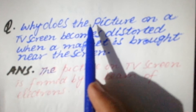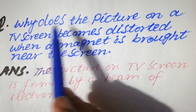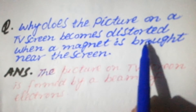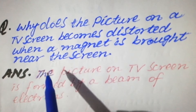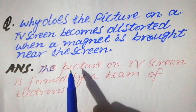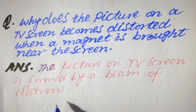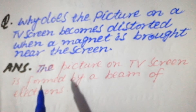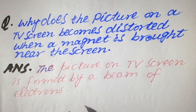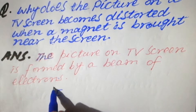A message received on my Facebook page: physics expert asks, why does the picture on a TV screen become distorted when a magnet is brought near the screen? The right answer: first of all, the picture is formed on a TV screen by a beam of electrons.